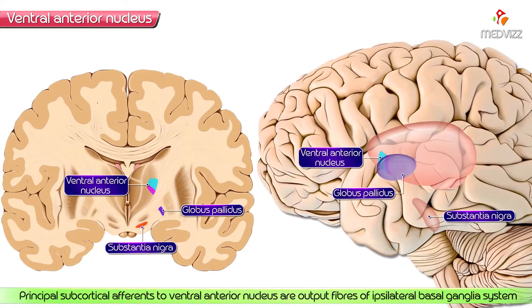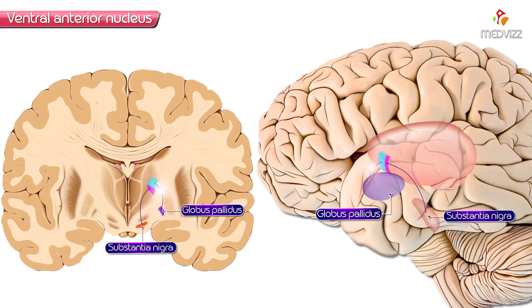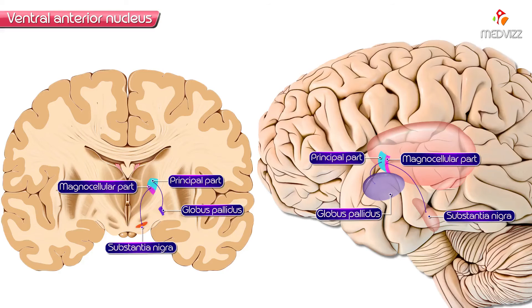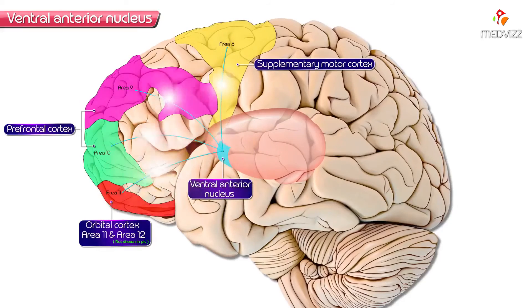The principal subcortical afferents to this region are the output fibers of the ipsilateral basal ganglia system, which originate from the internal segment of the globus pallidus and its homologue, the pars reticulata of the substantia nigra. The fibers from the globus pallidus terminate in the principal part, while fibers from the substantia nigra end in the magnocellular part.